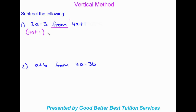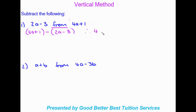So our expression becomes 4a plus 1 minus (2a minus 3). The brackets are important here — the left bracket will fall away, but because we have brackets on the right-hand side, the negative sign is going to multiply into the brackets. Our expression is now: 4a plus 1 minus 2a minus 3.